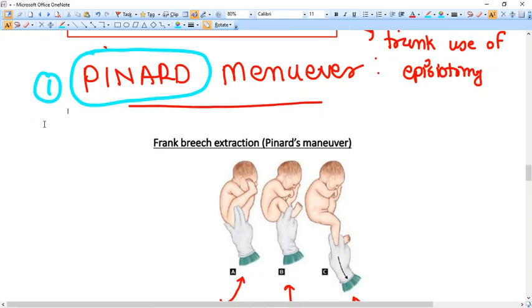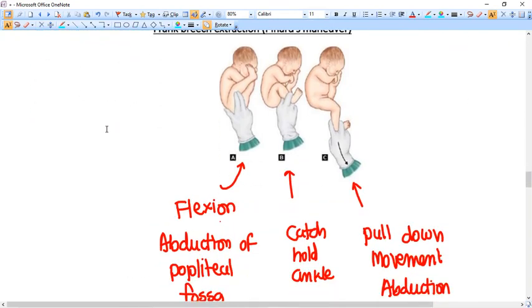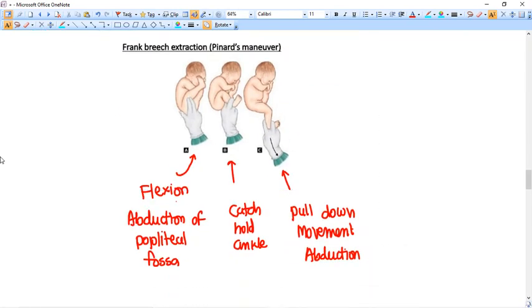Now the first maneuver as I said before comes, that is Pinard maneuver. What is that? In Pinard maneuver, you can see the figure. Whenever you see that the buttocks are coming out from the vagina, what you need to do is you need to extract the limbs, both lower limbs of the fetus out of the vagina. So what you do, it actually happens in frank breech. Whenever you realize that it is a frank breech, what you do, you need to first try to extract the lower limbs of the fetus.